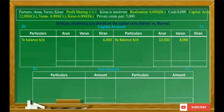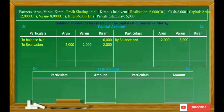The realization loss is distributed among the partners and will be debited to each partner's capital account. So, to realization: Arun 2,000, Varun 2,000, and Kiran 2,000. Once that is complete, the cash balance given in the balance sheet represents the balance available at the time of dissolution. This amount is debited to the cash account as the opening balance — in cash account, balance brought down: 8,000 rupees.